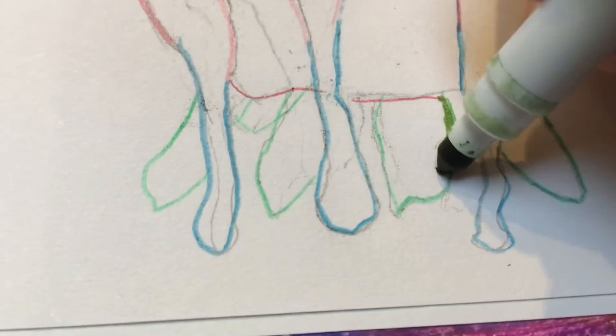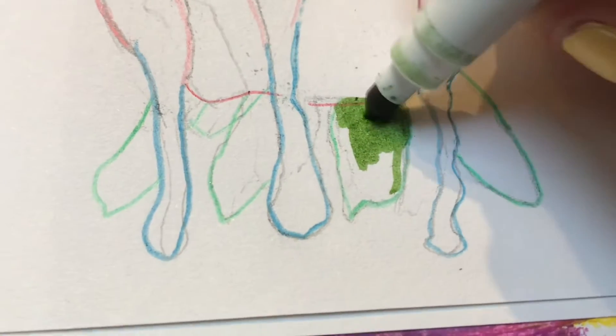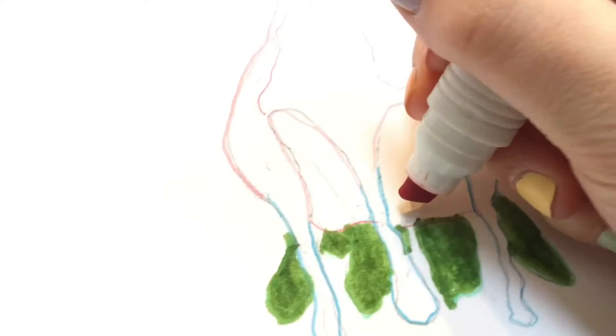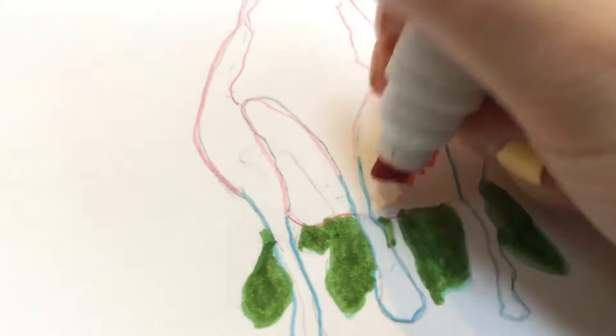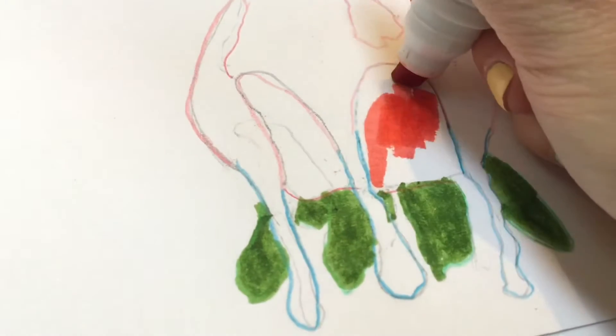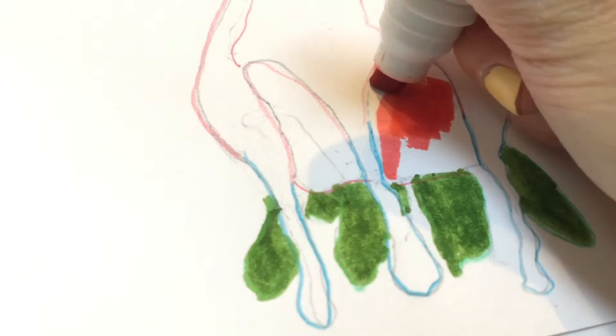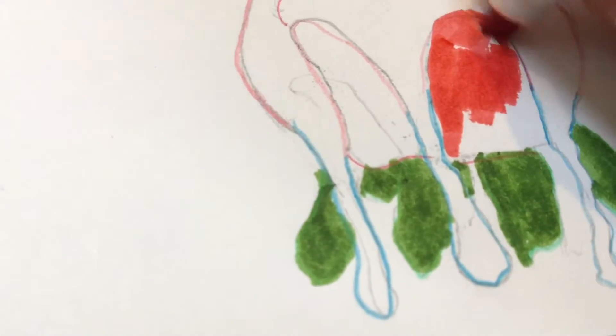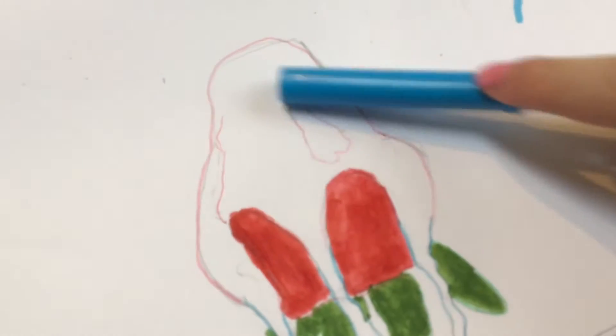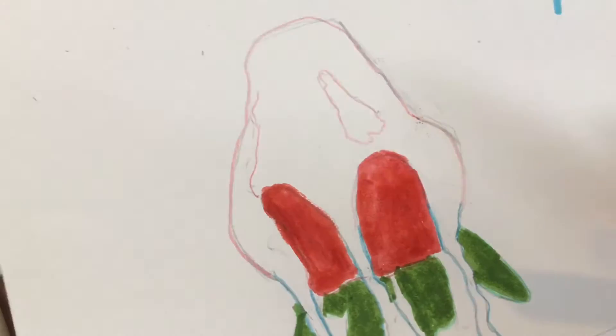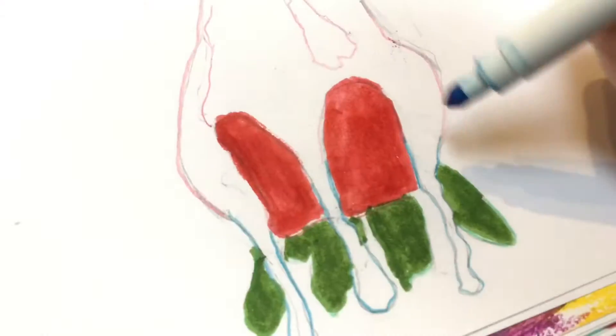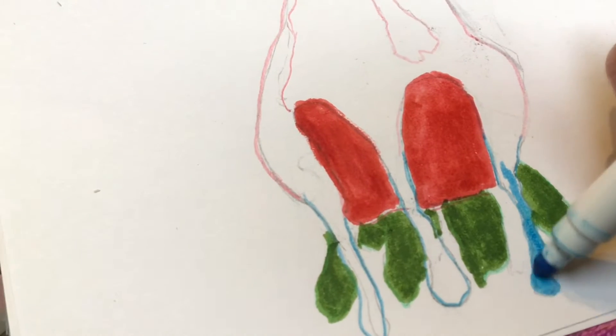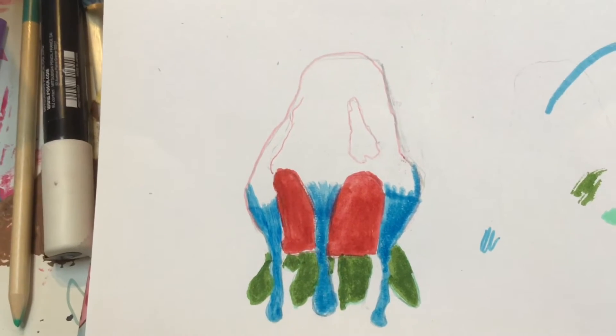Then I took my green marker and colored in the leaves. Then I took a red marker and colored in the strawberry part. Now with a blue marker, I'm coloring in the drips. This is how much I colored the drips.